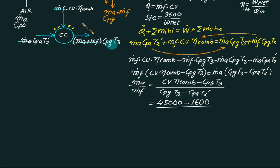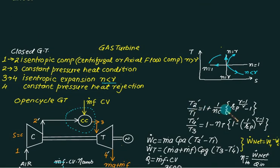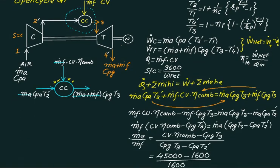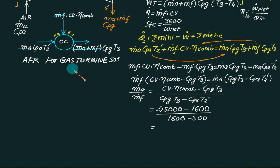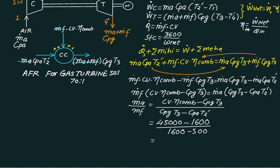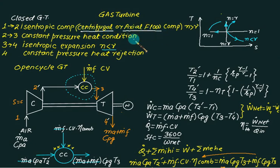With T3 around 1600 K and the compressor outlet temperature T2-dash around 500–700 K (depending on pressure ratio — for a pressure ratio of 4, T2-dash is roughly 500–600 K), the air-fuel ratio comes out to approximately 48. Varying T2-dash to around 500 K gives similar results. The conclusion is that the air-fuel ratio for a gas turbine is approximately 50:1, and can reach up to 70:1 — meaning 70 kg of air is required to burn 1 kg of fuel.